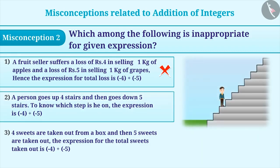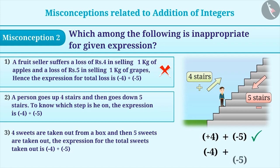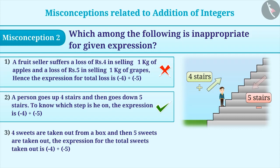The second statement shows that a person first goes up 4 stairs and then goes down 5 stairs. Here, we represent upward direction as plus sign and downward direction as minus sign. Therefore, to find his current position, use the expression plus 4 plus minus 5 instead of minus 4 plus minus 5. Thus, statement 2 is incorrect for the given expression, meaning option 2 is the correct answer to the given question. Sometimes students neglect upward and downward directions; as a result, they add the number of stairs and find the current position, which is an incorrect method.